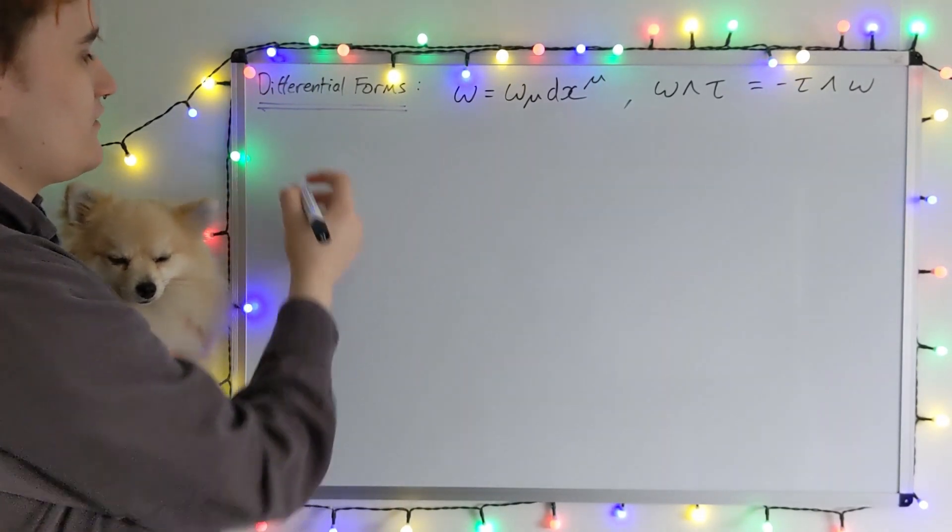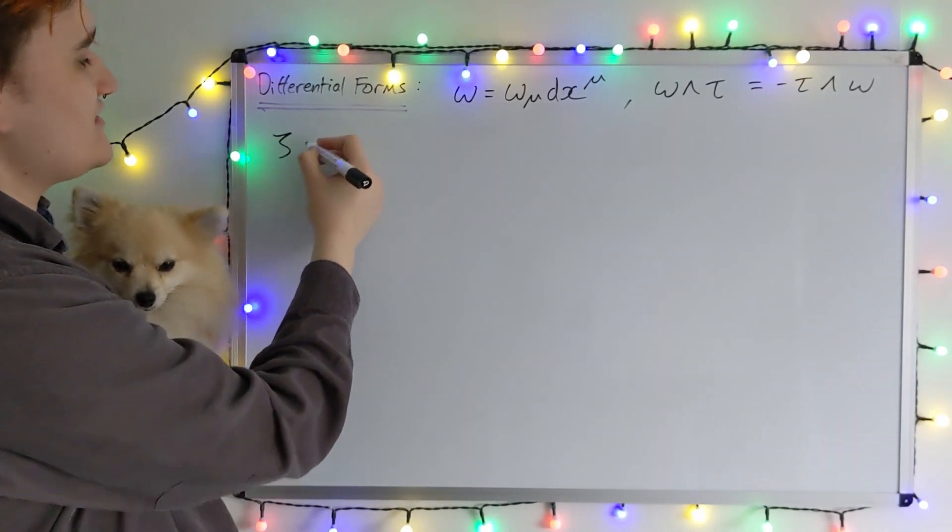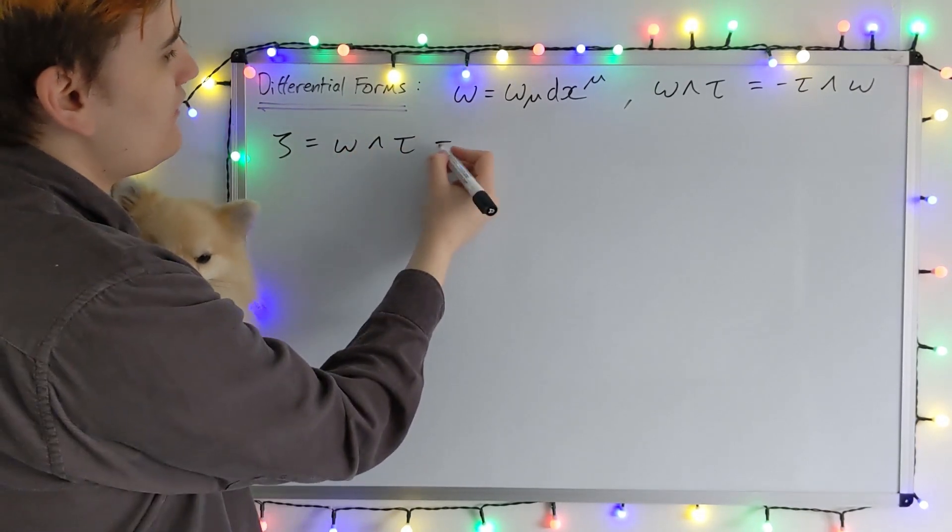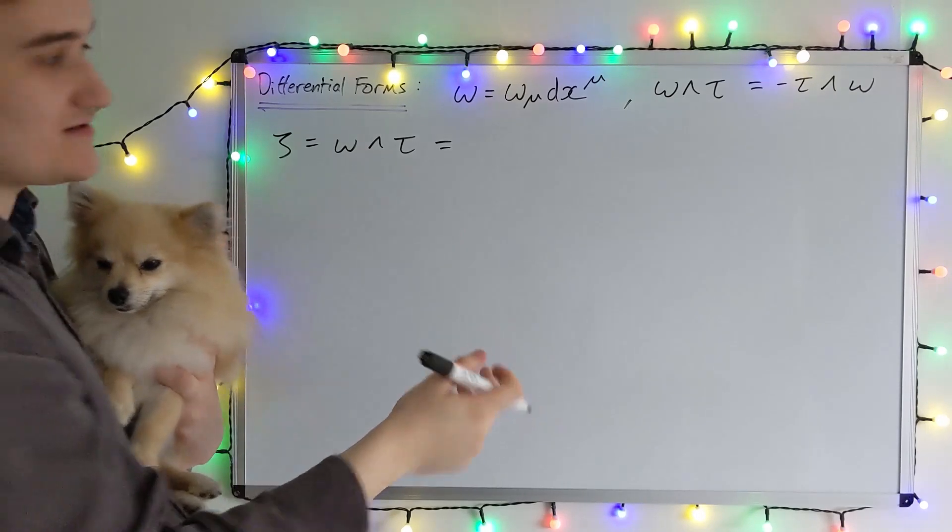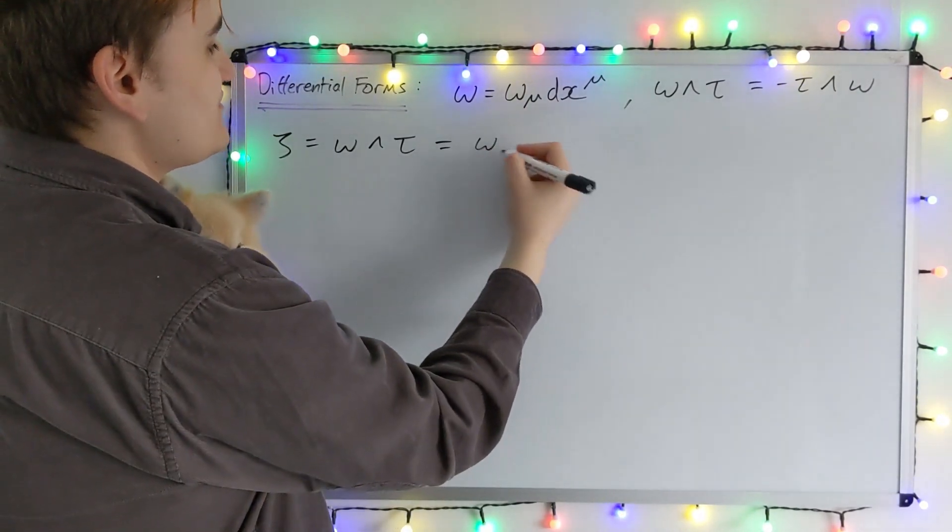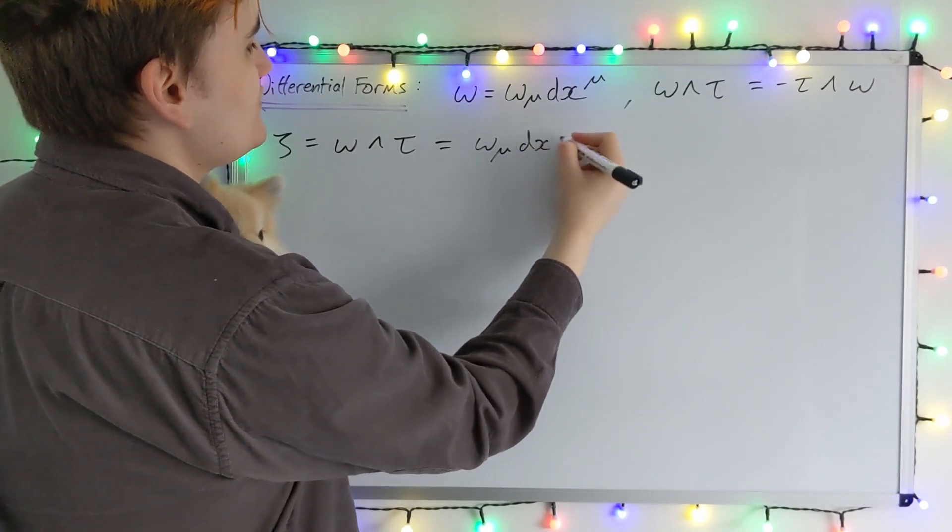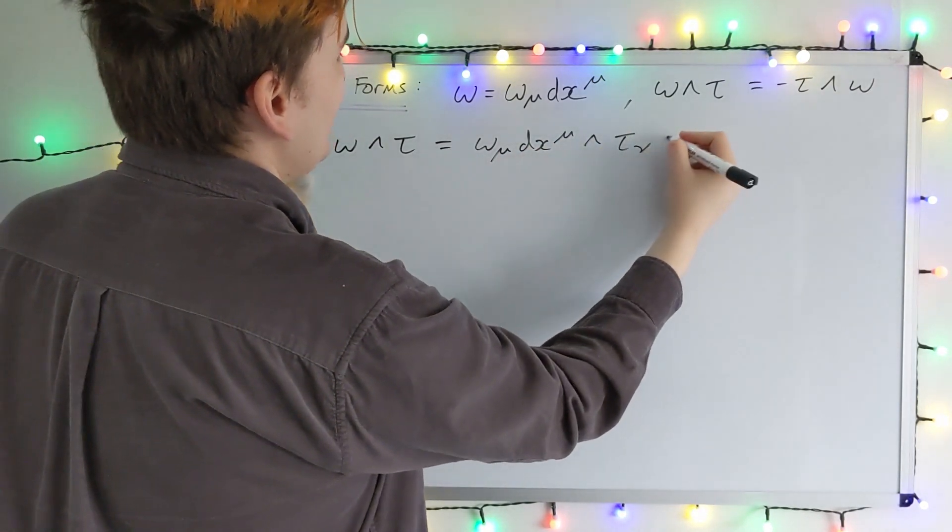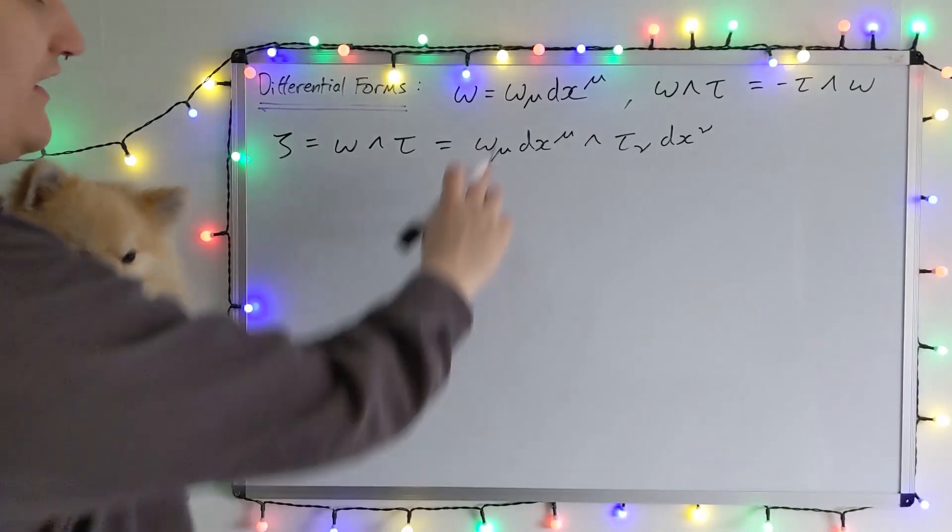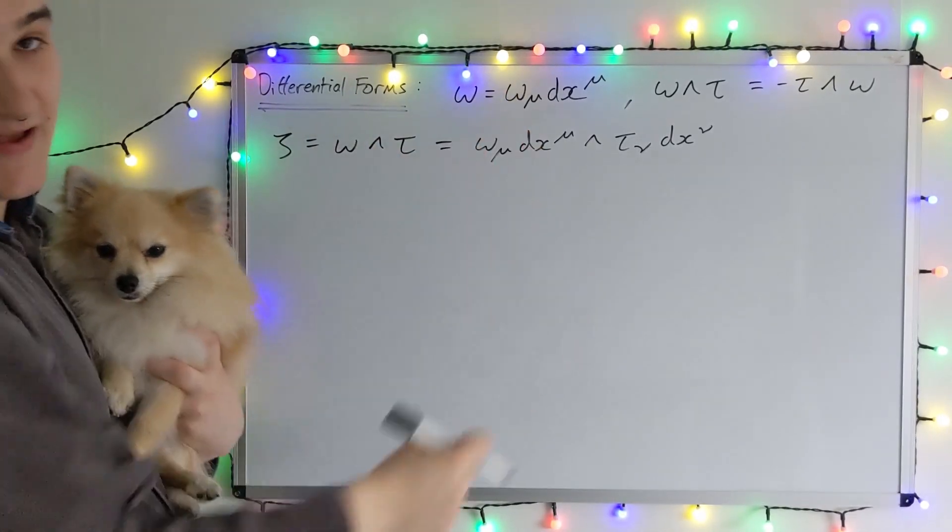So let's consider our two form zeta, which I said was omega wedge tau. And let's get an expression for this in terms of the basis. So if I just substitute our two one-forms written in terms of the basis, I've just expanded each of these in the basis.